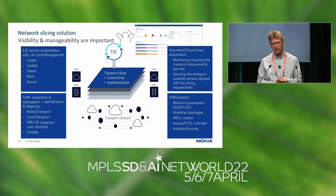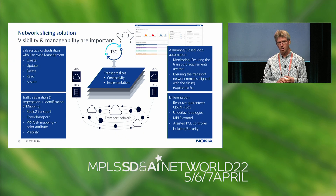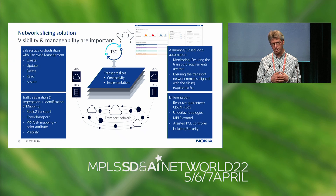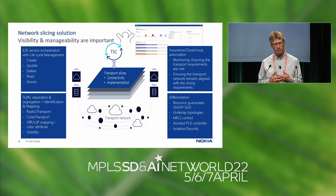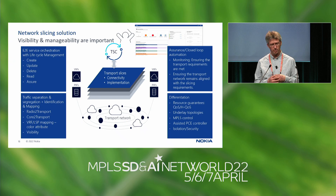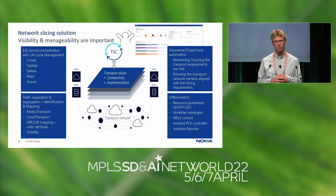In conclusion, network slicing is an end-to-end deployment. You need to manage the full lifecycle: creating, deleting, and maintaining slices. Visibility is equally important — being able to see whether a slice is operational, whether there is a problem, and who is impacted. This requires closed-loop automation: monitoring bandwidth and latency, feeding that data back, and using it for network optimization. Demos are available at our booth.